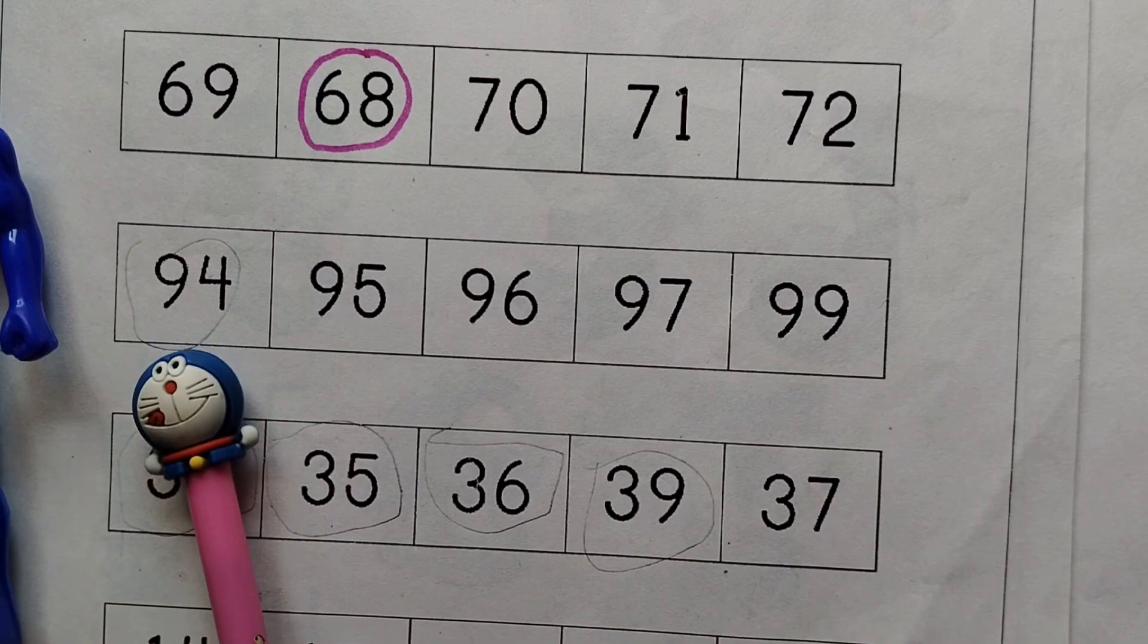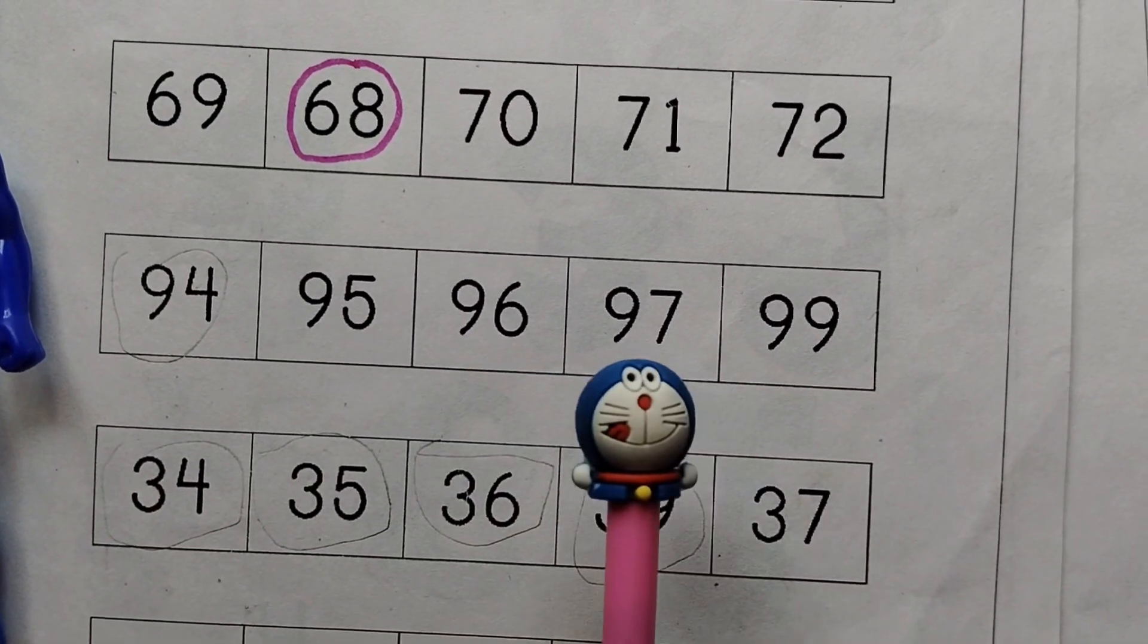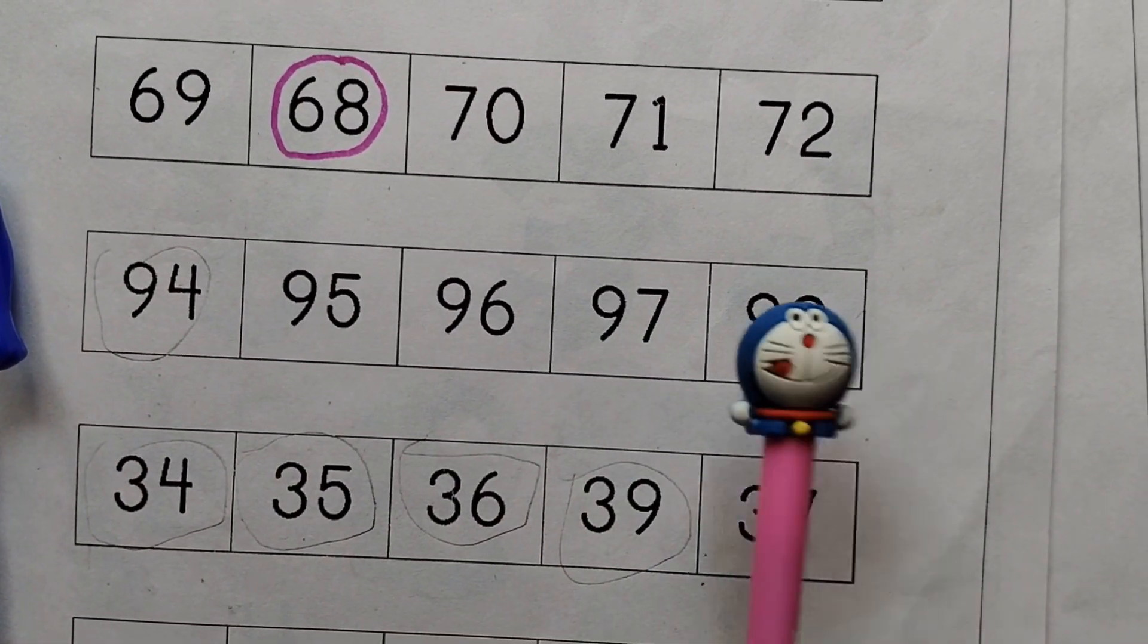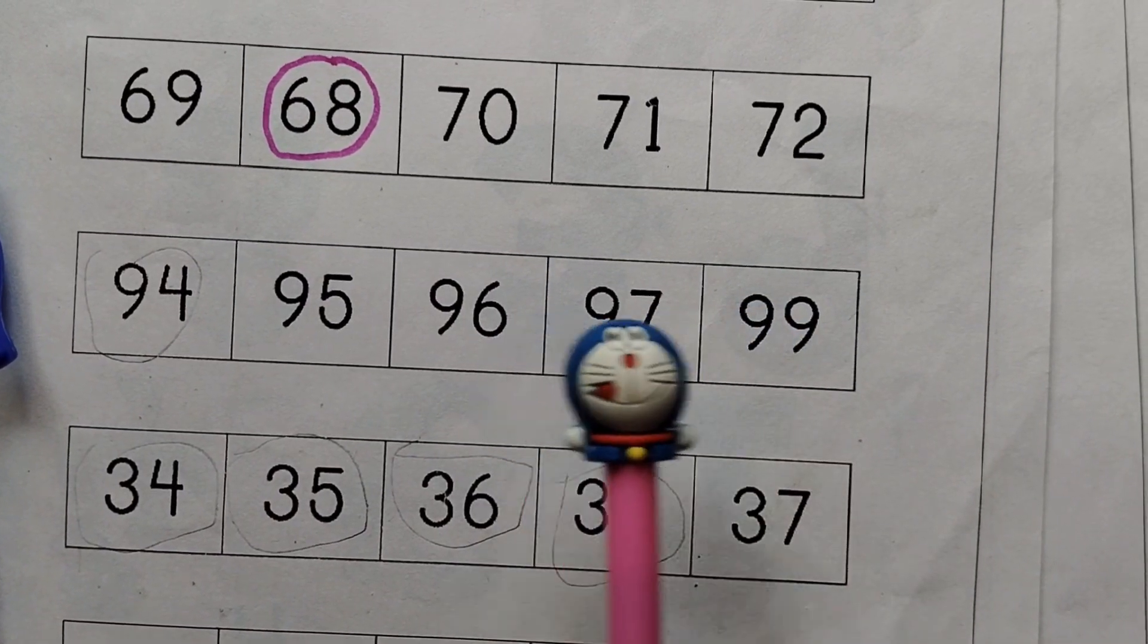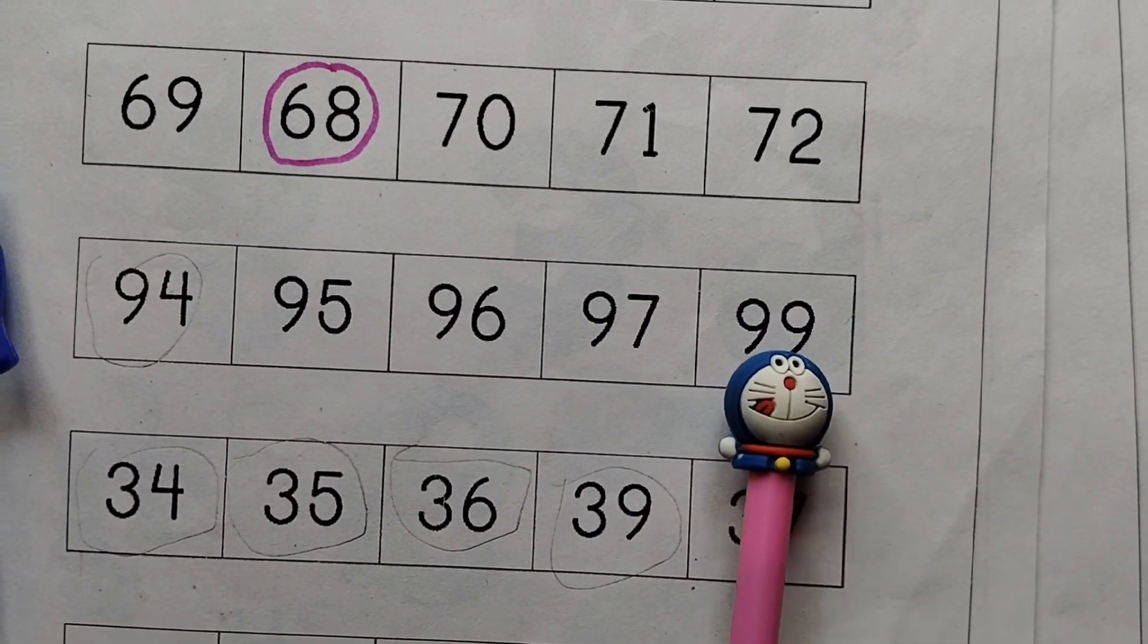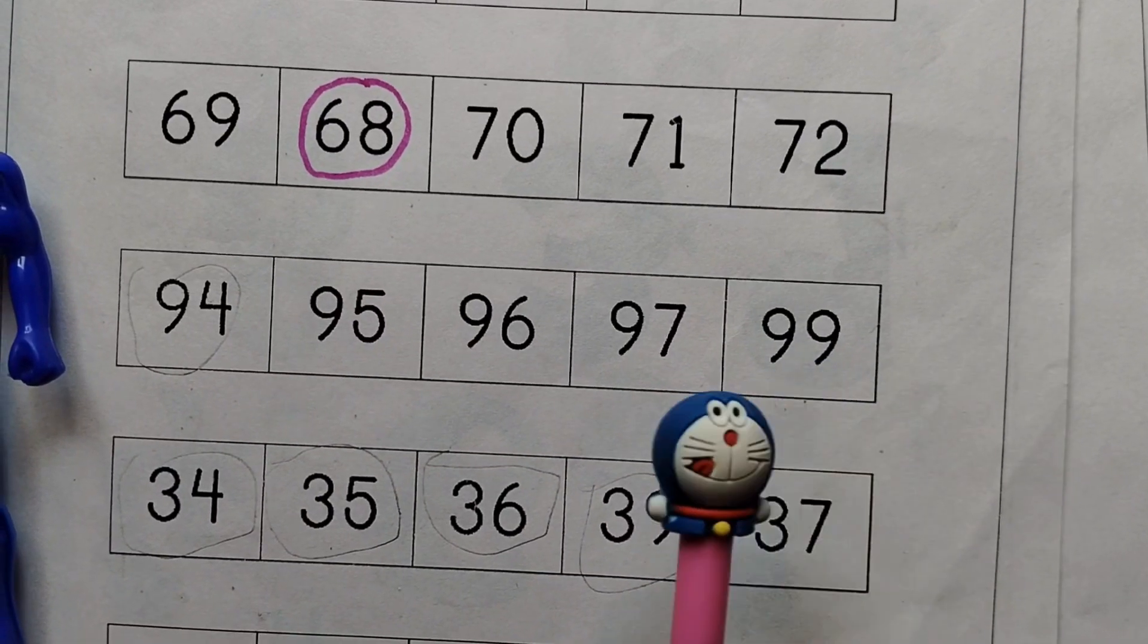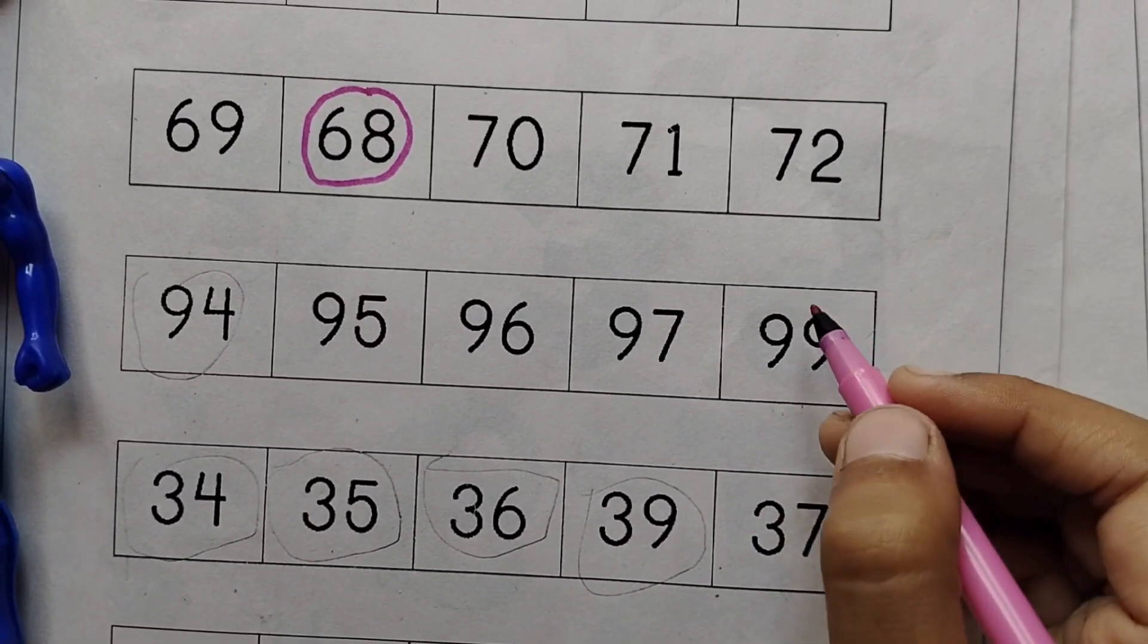94, 95, 96, 97, 99. 99 is the incorrect number in the sequence.